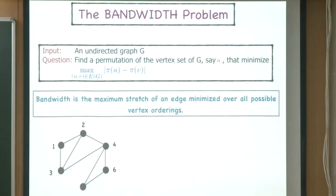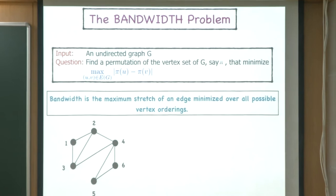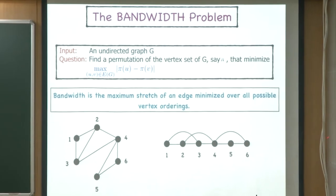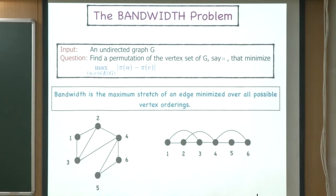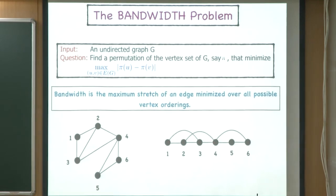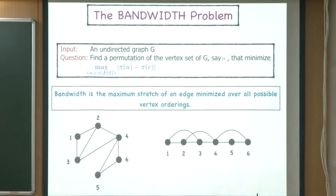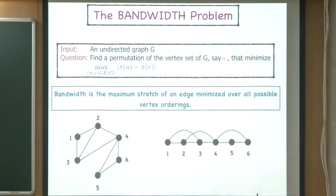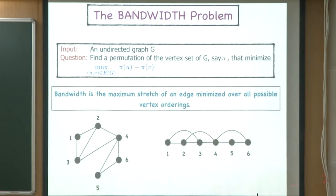Here is an example. This is the graph G and this is one ordering of its vertices. If you look at any edge in this ordering, the difference between the position values of the two endpoints is at most two. It's not difficult to see that an ordering with stretch one is not achievable. So we say this ordering has bandwidth two.